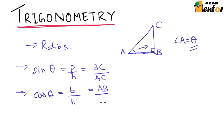The third ratio was tan theta or tangent of angle theta, that was nothing but sine theta by cos theta and we had perpendicular by base, or this was BC by AB.